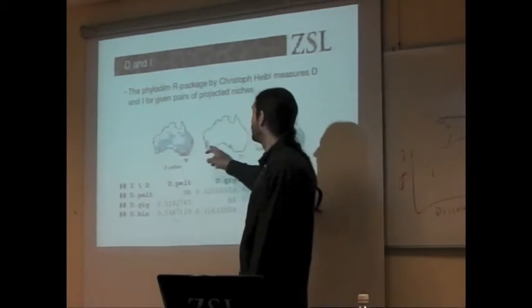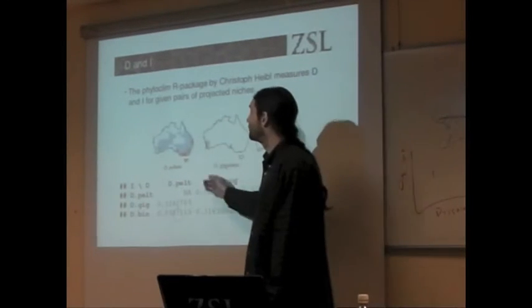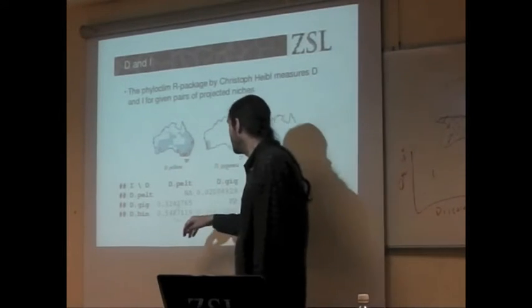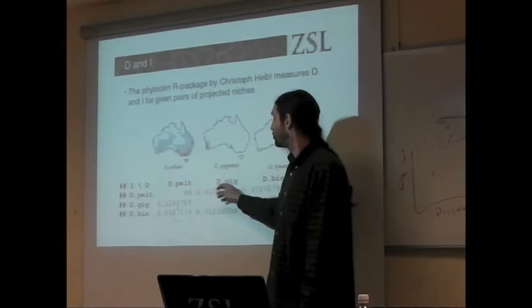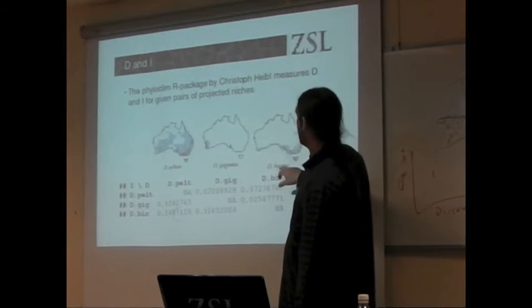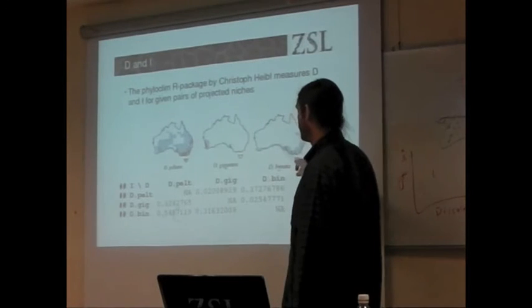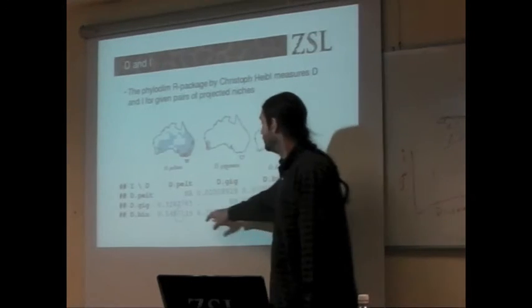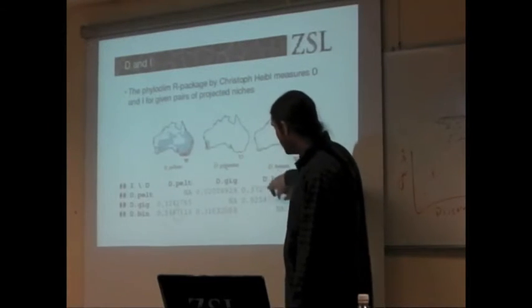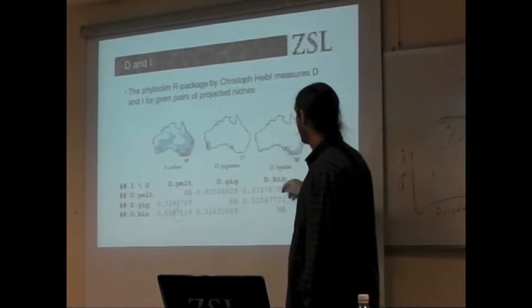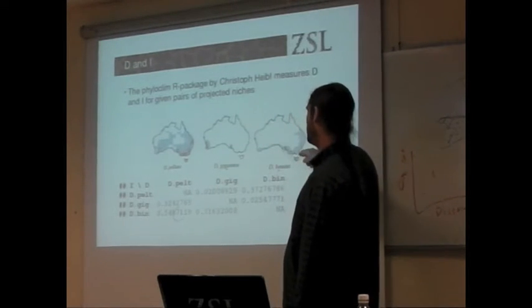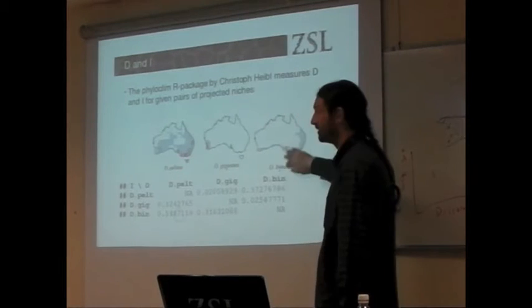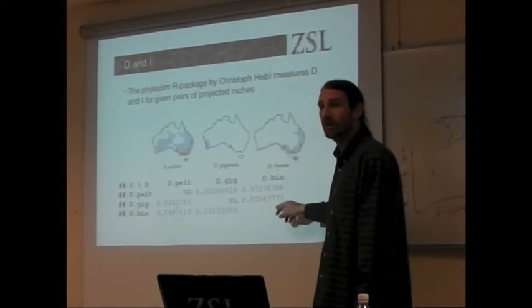So here are three different niches. Okay. So here are three different niches and essentially we can do simple calculations. What's the correlation between this and this? And we get a scoring somewhere between zero and one. So in this instance, Drosera peltata and Drosera gigantea have the highest correlation of 0.5 using the I statistic and 0.37 using the D statistic.